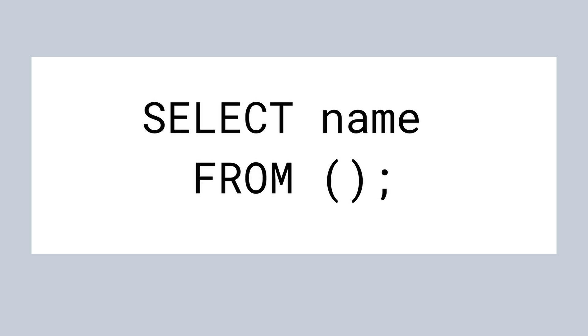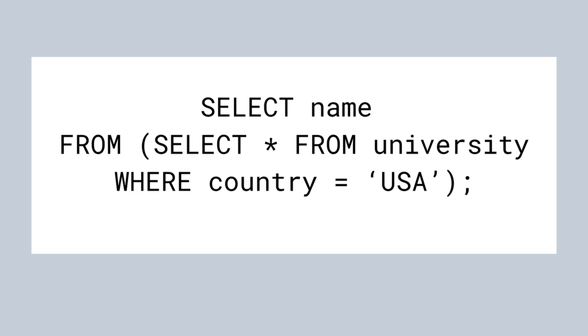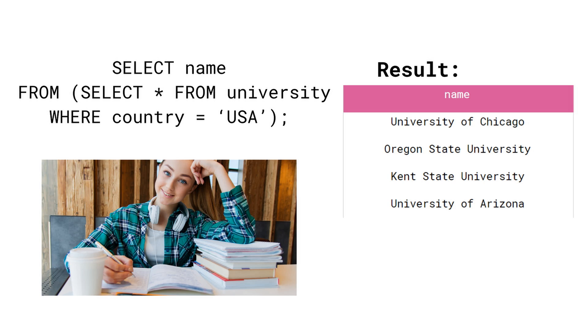Now we'll modify the query by changing the FROM clause. Instead of the university table name we'll provide a pair of brackets, which as you already know introduces a subquery in SQL. Inside the brackets we'll limit the university table by selecting rows with universities in the USA alone. We'll write the following subquery: SELECT * FROM university WHERE country = 'USA'. If we now run the query we can only see university names from the USA in the resulting set, because we retrieved information from the subquery rather than the whole university table. In terms of columns the subquery contained the same columns as the university table because we used SELECT *. In terms of rows, however, the subquery only contained universities from the USA because we used a WHERE clause.